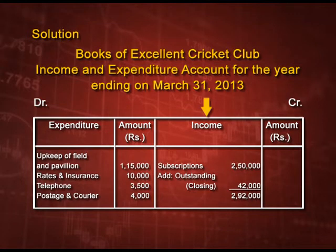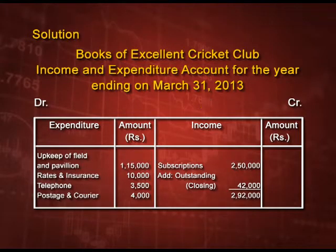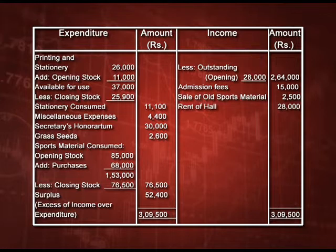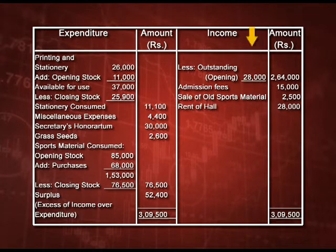Now let us come to the income side. The item is subscription — rupees 250000 is given in the receipt and payment account. We have added outstanding at the end of rupees 42000 (from additional information), and deducted opening outstanding of rupees 28000 (also from additional information). Subscription belonging to the current year is rupees 264000. Then admission fee is transferred as it is from the receipt and payment account as it is a revenue nature item. Sale of old sports material and rent of ground rupees 28000 are also transferred directly.